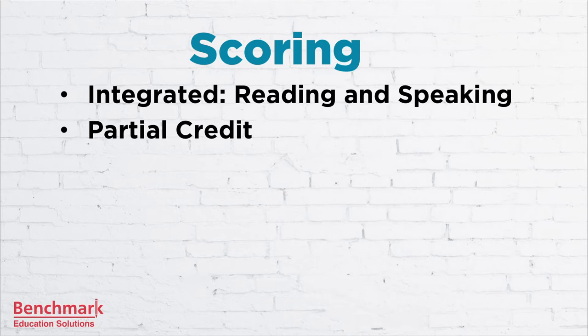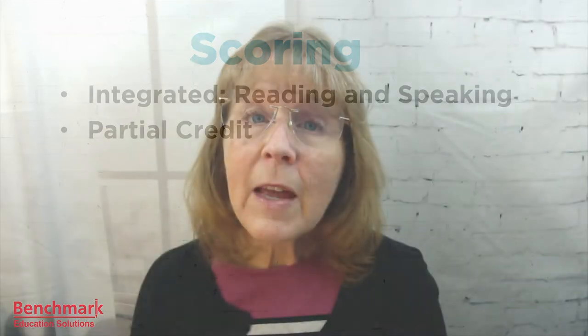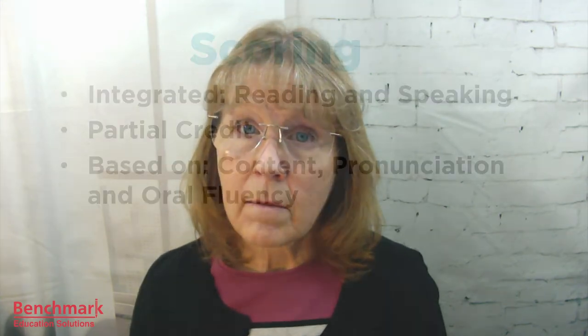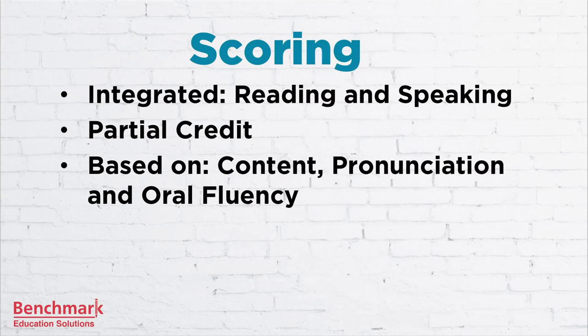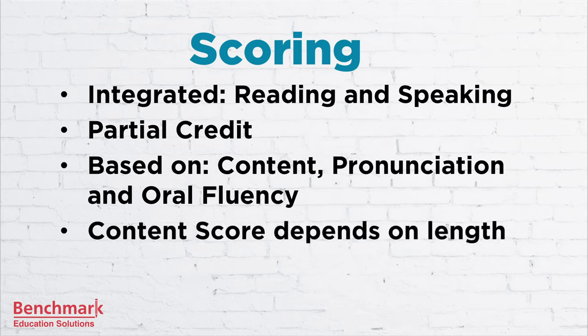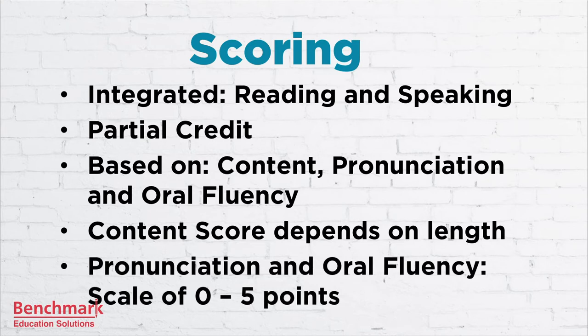Now that you know a little about what kind of scores these are, let's talk about what your score is actually based on. PTE looks at three things: content, pronunciation, and oral fluency. Your content score depends on length, and your pronunciation and oral fluency are scored on a scale of 0 to 5. Let's look at these three things in more detail.